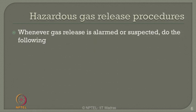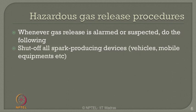Let us now understand what procedures one must follow when a hazardous gas release is alarmed or suspected at an exploration and production platform. Whenever gas release is alarmed or suspected, you must train people to immediately shut off all spark-producing devices — for example, vehicular movement and mobile equipment. All spark-producing devices should be instantaneously shut off if you sense a possible gas release hazard in the working area.